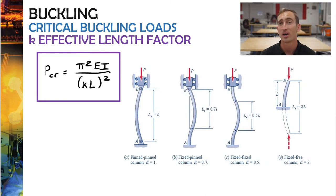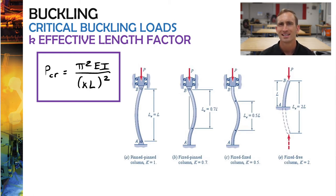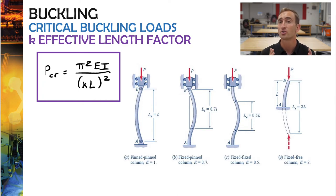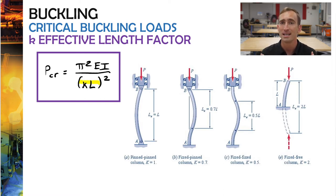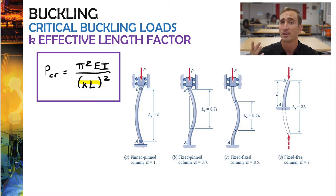Let's talk about K, the effective length factor. K is a unitless thing — it's just a multiplier for the length. The entire bottom part of our formula is K times L, all squared. What K is referring to is how much of the length of the beam or column is actually free to bend. That's why we call it the effective length factor.